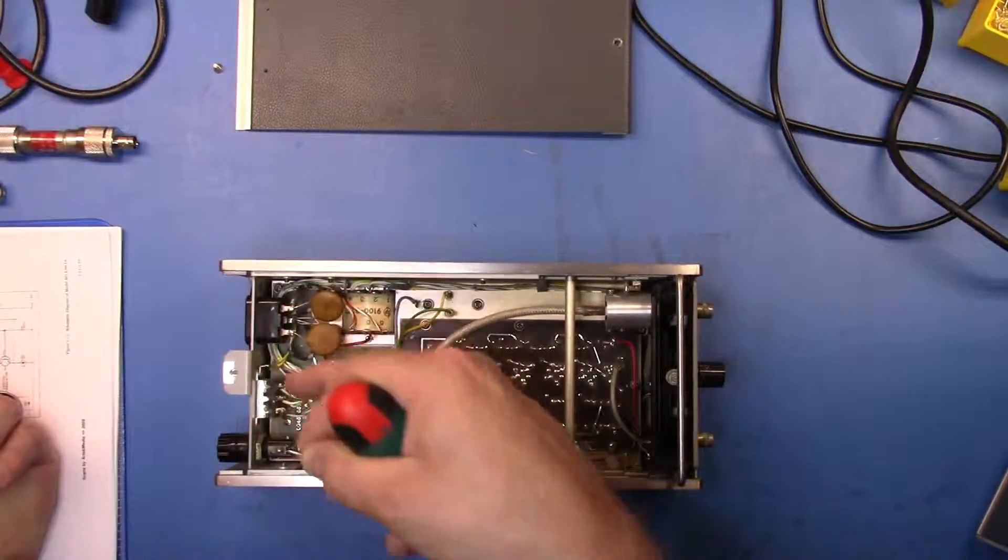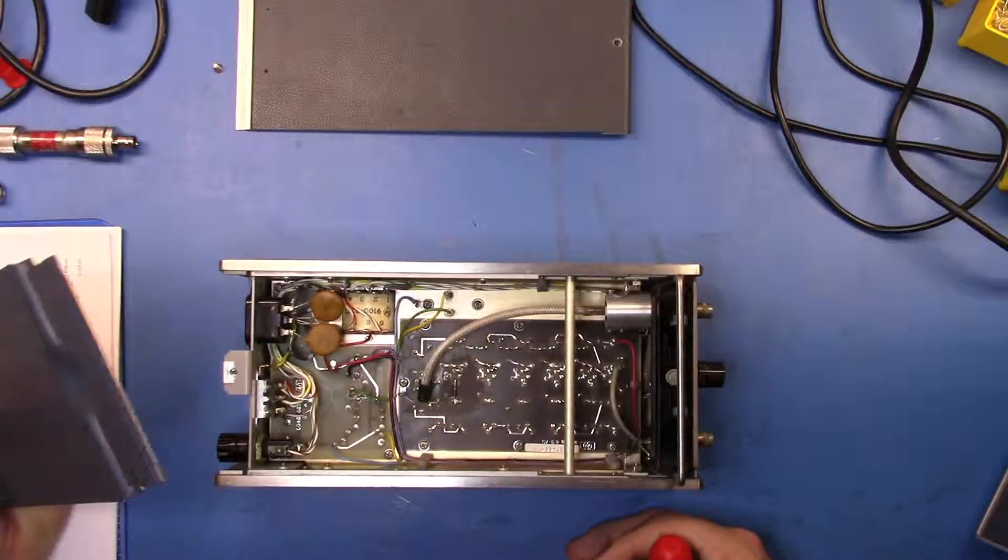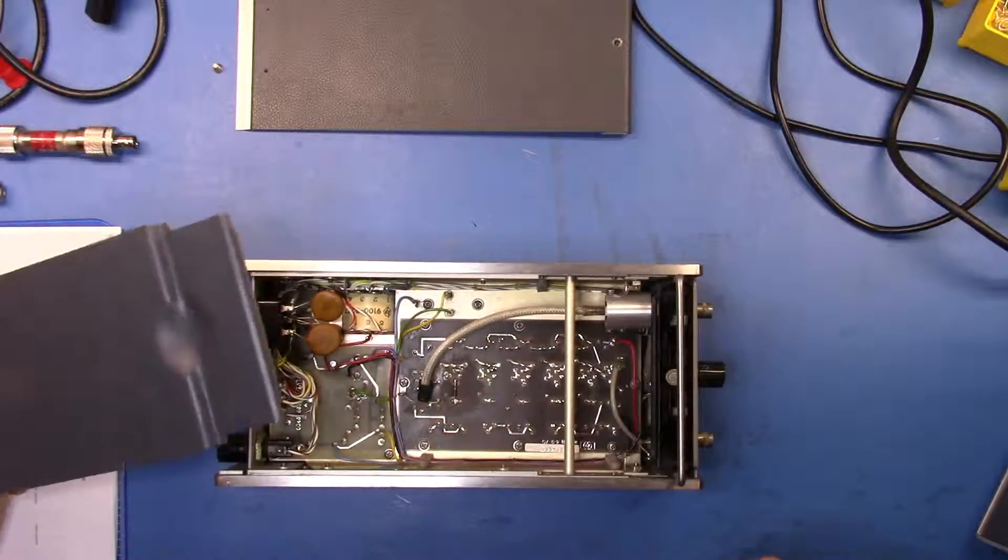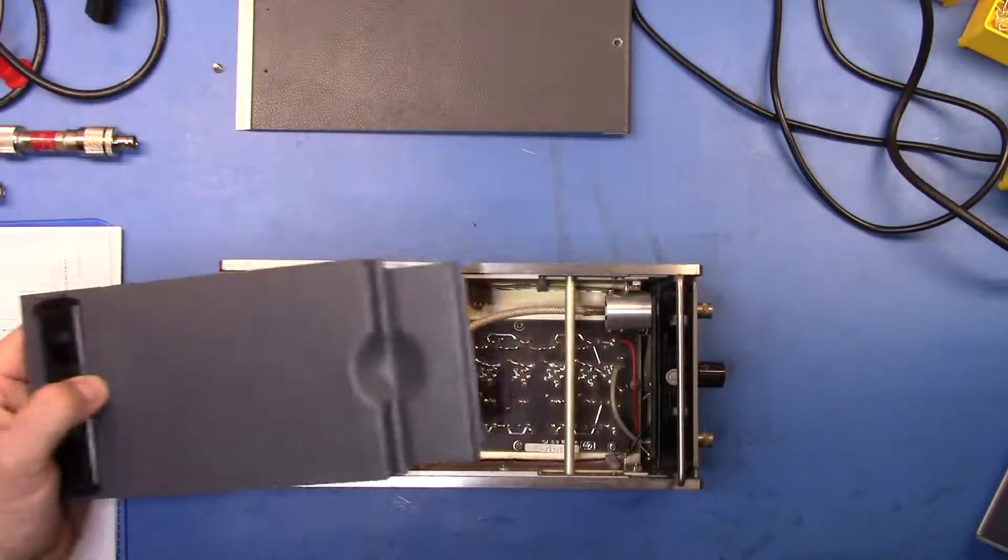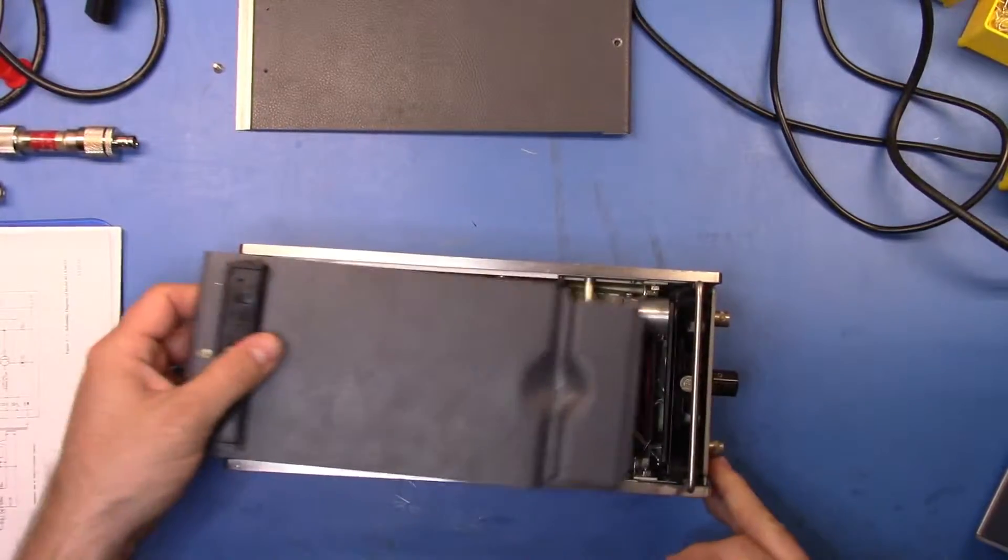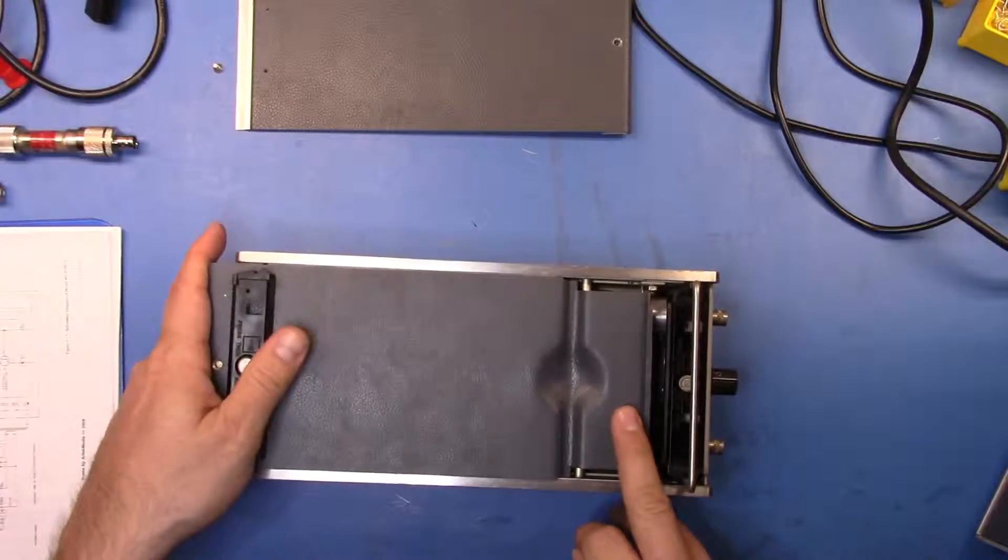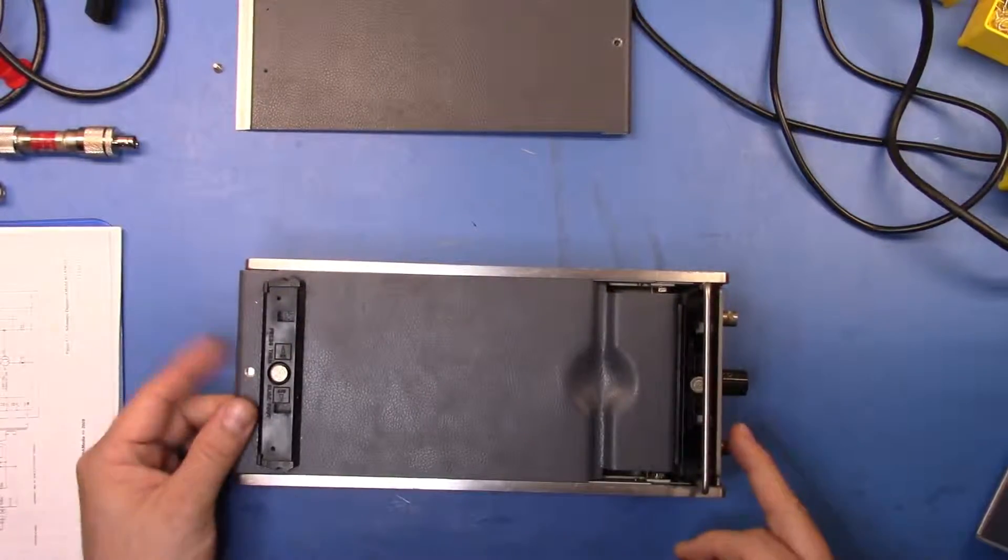Basically you can see the AC input, the switch fusing to set whether it's 220, 230 volts or 110, the amplifier and the bottom of the board, and then the output attenuator. So let's just drop that back in and we'll put this top back on and then flip the unit back over.